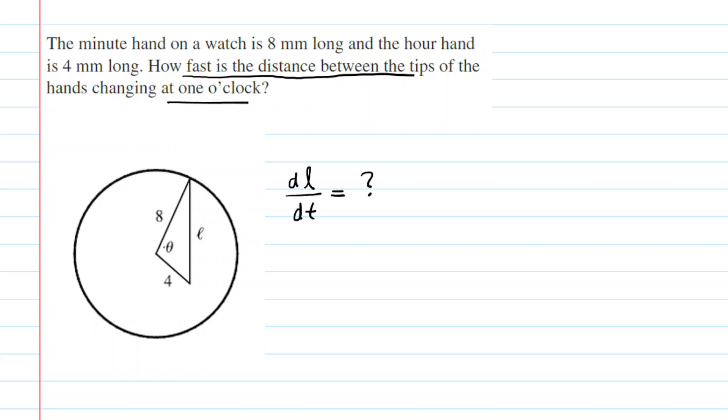If we look at this picture, we have this triangle as noted, and we can actually use the law of cosines as an equation to represent this triangle. Hopefully we remember our law of cosines from a pre-calculus course. If we write this out, we would say that L squared equals 8 squared plus 4 squared minus 2 times 8 times 4 times the cosine of the angle between those two segments, so the cosine of theta.